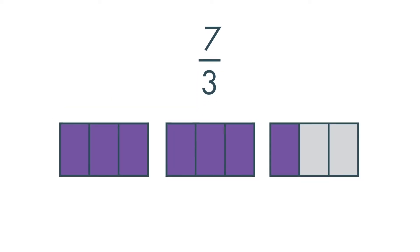These rectangles are divided into thirds. 7 thirds are shaded. 7 thirds is an improper fraction because the numerator is greater than the denominator.